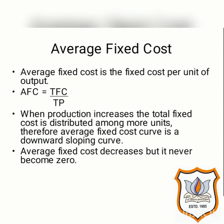When production increases, the total fixed cost is distributed among more units, and therefore the average fixed cost curve is a downward sloping curve. For example, when 10 units are produced and total fixed cost is Rs. 100, then average fixed cost would be Rs. 10. But when 20 units are produced and fixed cost is Rs. 100, average fixed cost reduces to Rs. 5. Similarly, when production is increased to 50 units and total fixed cost is Rs. 100, average fixed cost is reduced to Rs. 2. That means with every increase in production, average fixed cost decreases — however, it never becomes zero.